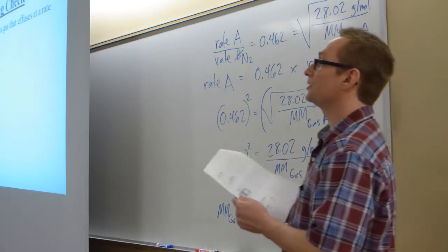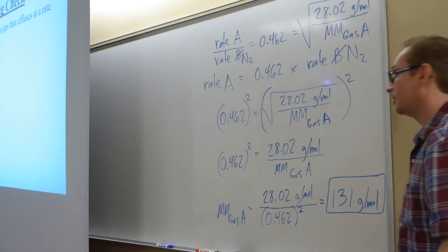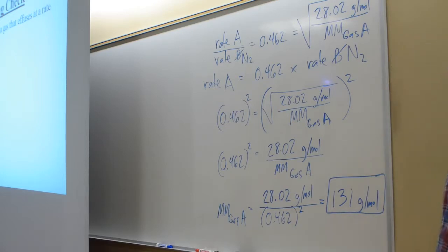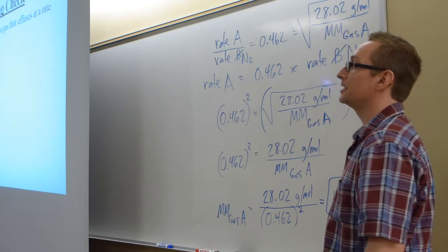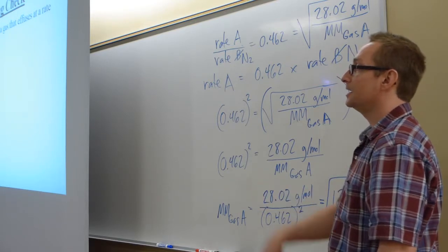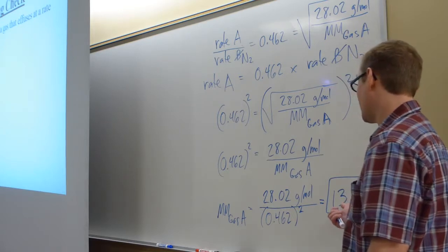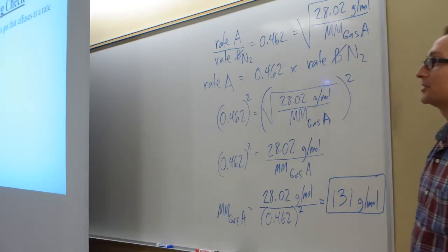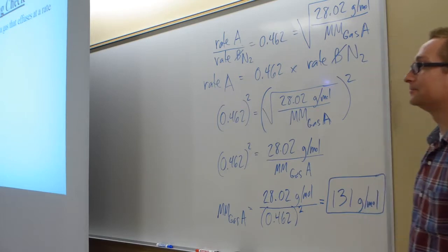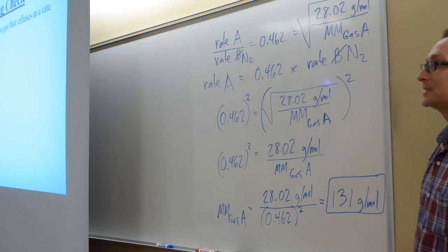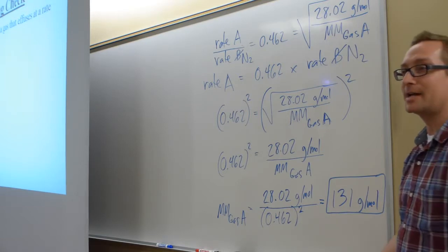Is there a likely gas that that might be? Yeah, maybe xenon, right? Xenon is 131.294, so it might be a specific isotope of xenon. In fact, xenon has 54 protons. So if the exact mass is 131, how many neutrons are in it? I don't know, 131 minus 54 would be like 75 neutrons in that xenon atom.